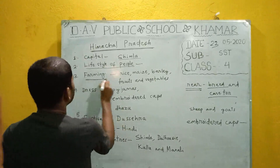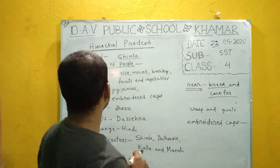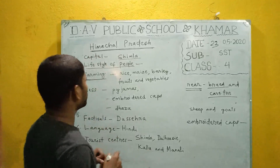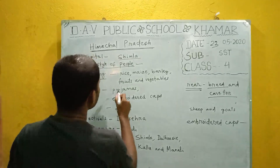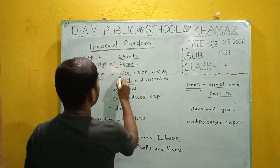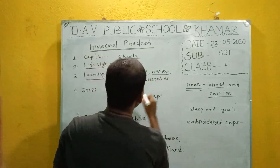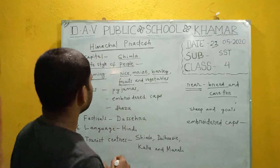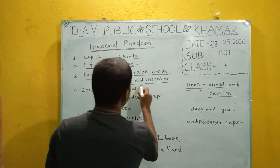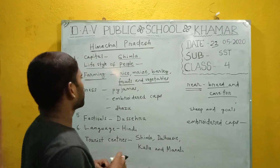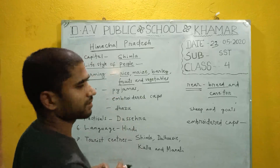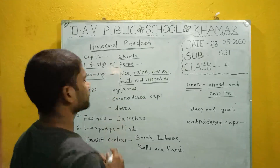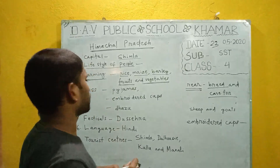The people of Himachal Pradesh mainly associate themselves with farming activities. They grow different types of food grains like rice, maize, barley, fruits, and vegetables. They also depend on these farming activities for their economic life.